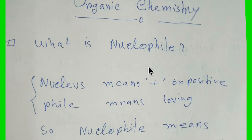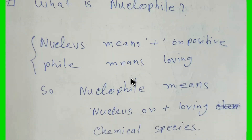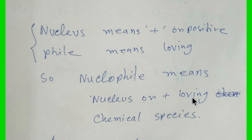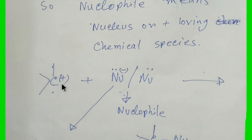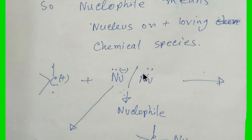What is a nucleophile? 'Nucleus' means positive — something positive, right? And 'phile' means loving, means liking. So nucleophile means nucleus-loving or positive-loving chemical species. Here is a carbonium ion where the carbon atom is positive, and here is the representation of a nucleophile. A nucleophile may be a negatively charged molecular species, or a neutral atom or species.